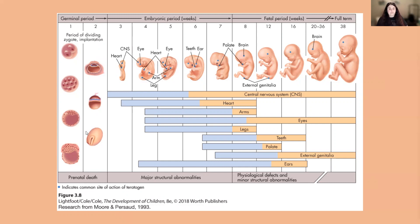Looking at the diagram, certain things are developing at different times, so teratogens will have more pronounced effects at certain times depending on which organ is developing. The blue part of each bar represents when there is the most risk of major abnormalities occurring — the really sensitive period. If a teratogen is introduced during those blue periods, you're more likely to see a really big abnormality. The peach-colored second part of each bar indicates reduced sensitivity — there can still be effects, but the risk is reduced. The early phases definitely matter the most.